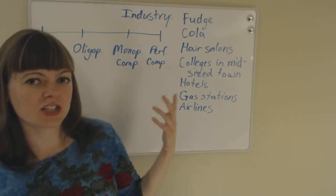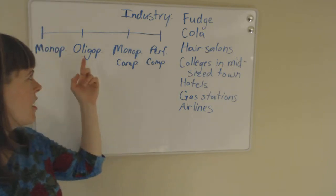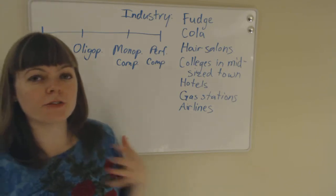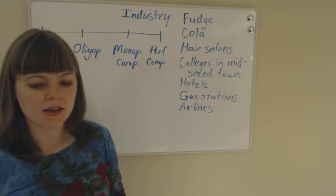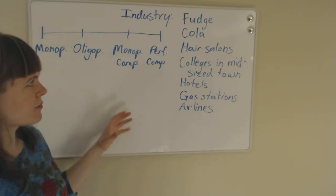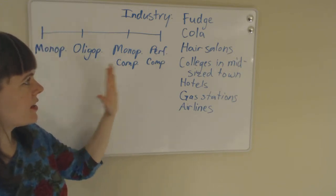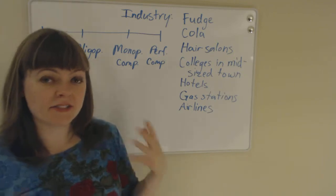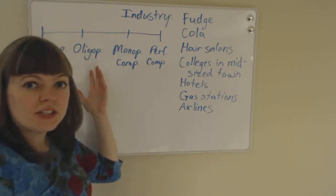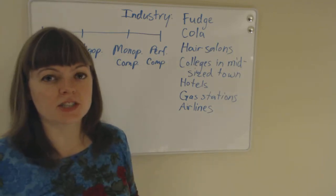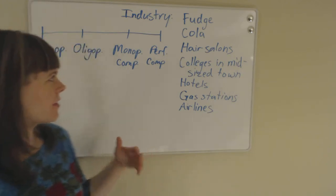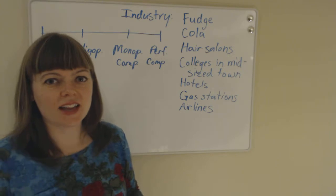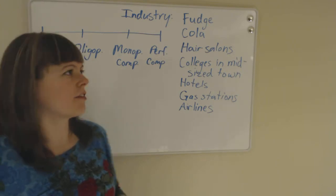Most industries fall more in the middle. There's a little bit of product differentiation, so there's monopolistic competition, or there's a few different firms that are all really powerful, which is an oligopoly. And it's not like firms always fall neatly into one or another. And it's definitely not like all oligopolies are the same, or all monopolistic competition industries are the same. But we can still think about them using the classic economics structure of thought.